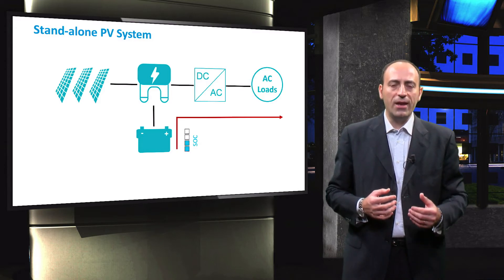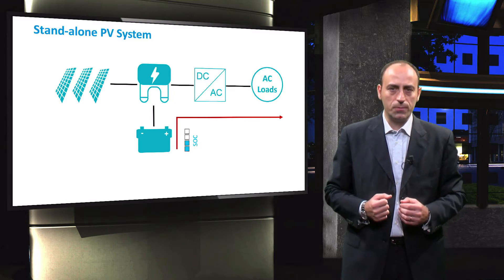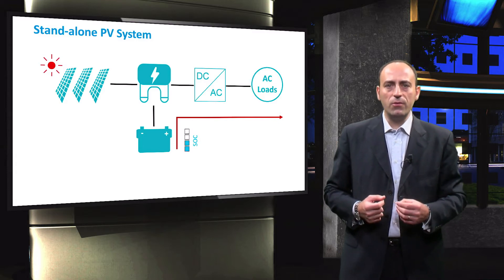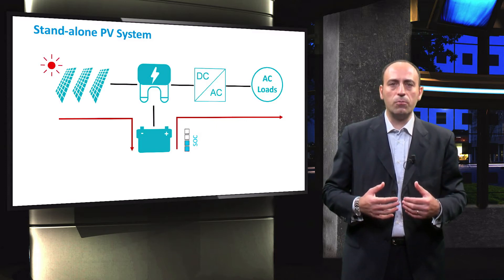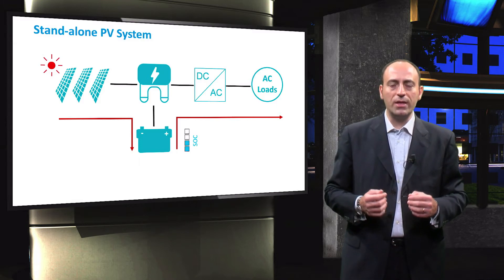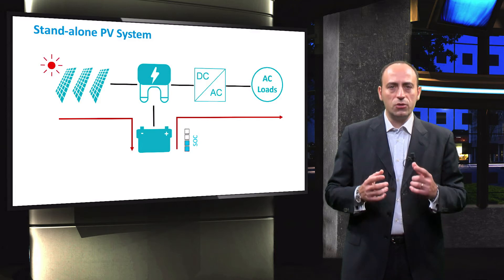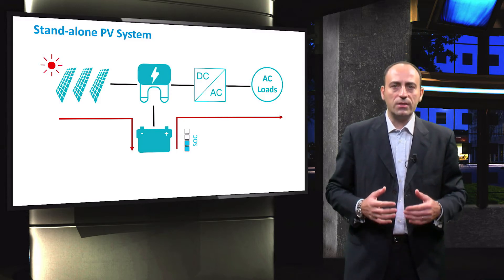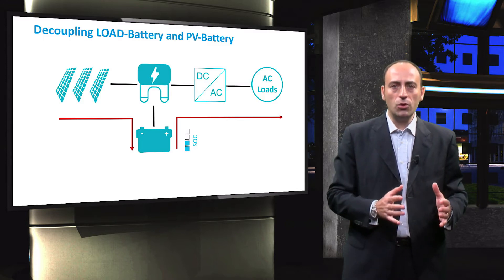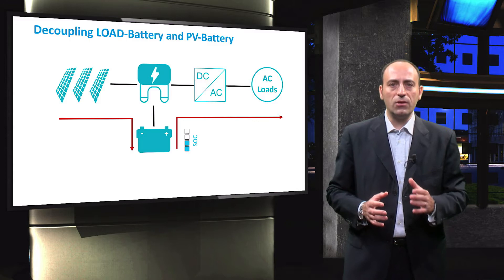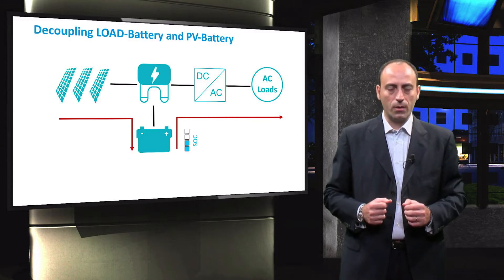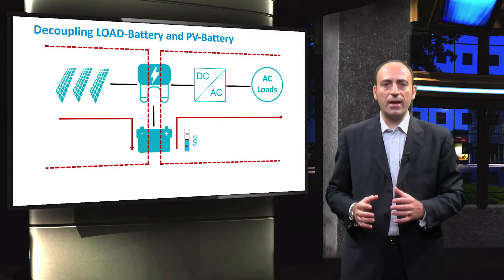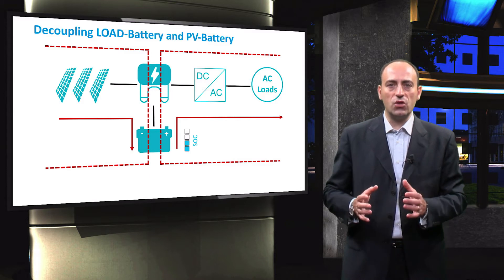The battery will supply energy to the load while its state of charge starts to reduce. Later, when the sun is available, the PV module begins to deliver electricity. This energy is sent to the batteries for recharging them. Now the battery is supplying energy to the loads and receiving energy from the PV modules at the same time. The whole idea of this animation is to make you understand that energy flow in the standalone PV system happens via the batteries at all times. To design such a system, it is important to decouple the PV module and the loads from each other and instead connect them separately to the battery through the charge controller. By following such a design approach, we can split the system into the load-battery bank combination and the PV-battery bank combination, thus making it easier to analyze and size the different components.